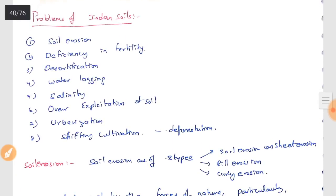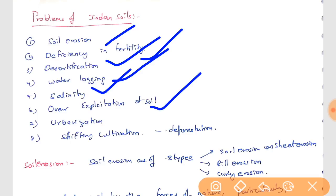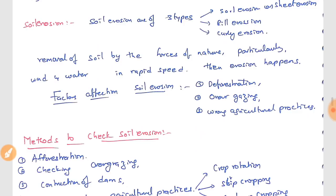The main problems faced by Indian soils are: soil erosion, which is the main enemy of agriculture; deficiency in fertility — alluvial soil lacks nitrogen, black soil lacks other minerals; and there is no perfect soil in India. Other problems include desertification, waterlogging, salinity, over-exploitation of soils, urbanization, shifting cultivation, and deforestation.